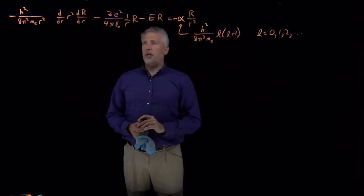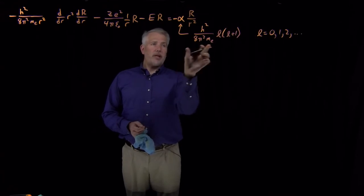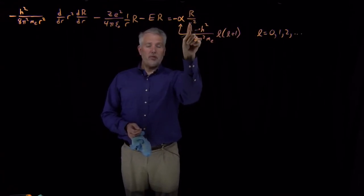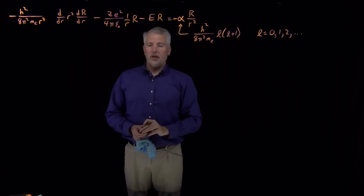So if I rewrite this equation, and when I do that, I'll insert this value of alpha, and I'll bring this whole term, the negative alpha R over R squared term, bring that over to the left-hand side.